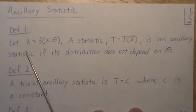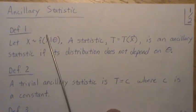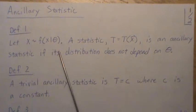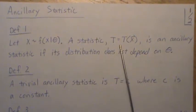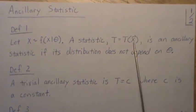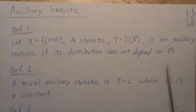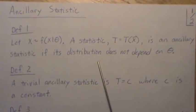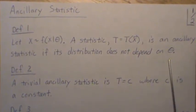So definition 1 is let X be distributed with this density or distribution. A statistic T, and we're just going to use T, but technically we probably should write it as a function of the data, is an ancillary statistic if the distribution does not depend upon theta.